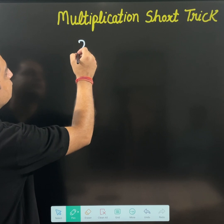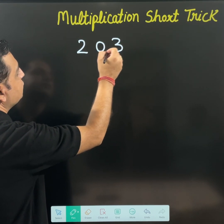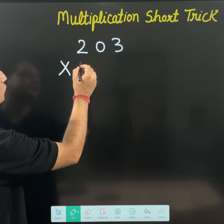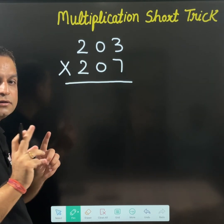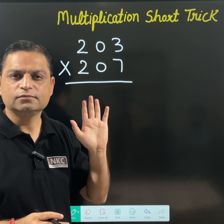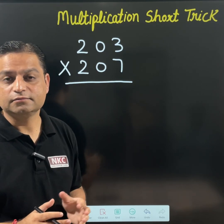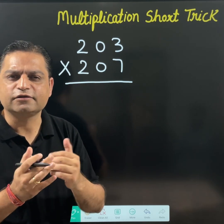Let us suppose we have a number 203 and you need to multiply it with 207. Do remember the middle term is 0. Then this trick is applicable, and this is going to be very easy and very interesting as well.